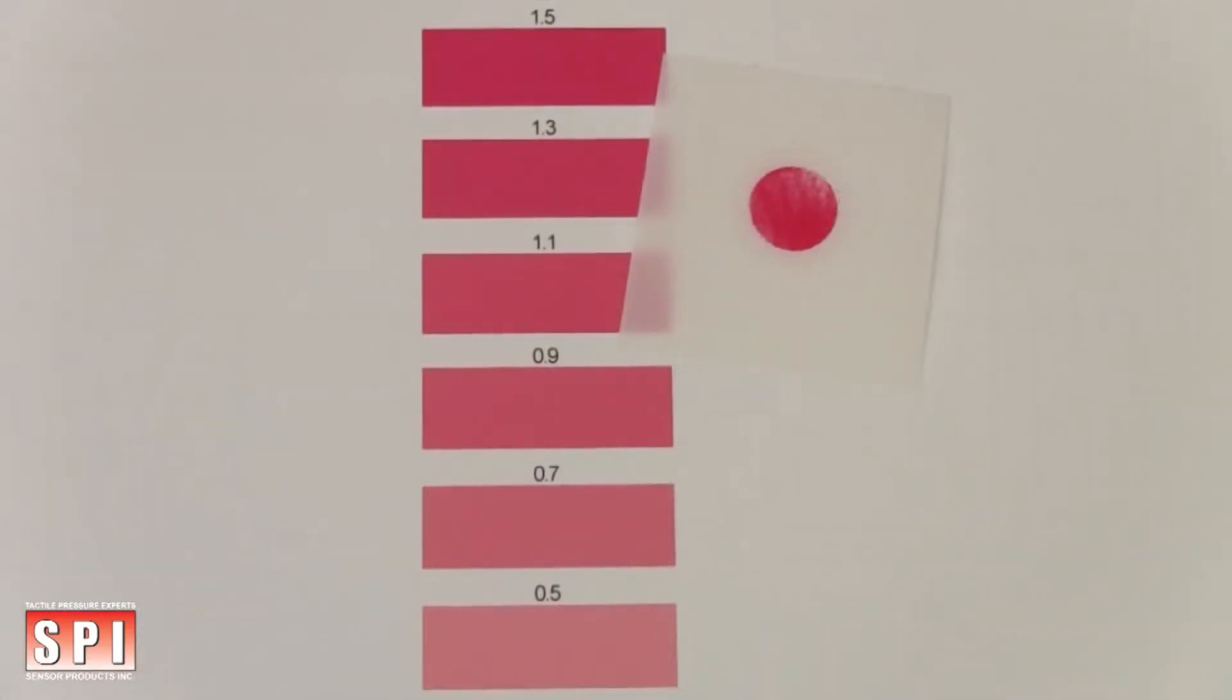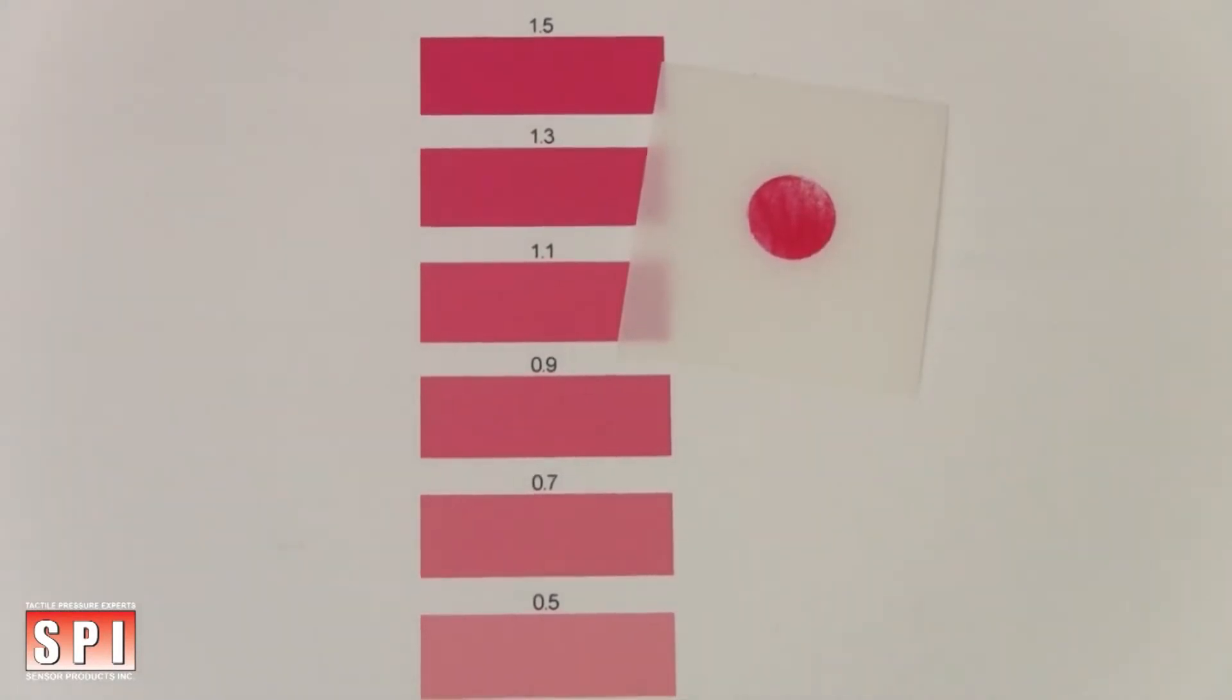Remove the donor sheet and discard. Conceptually similar to litmus paper, the color the film turns is directly proportional to the amount of force applied. In areas of high pressure, the film's tone will become a dark red. In areas of low pressure, the film's tone will become lighter.